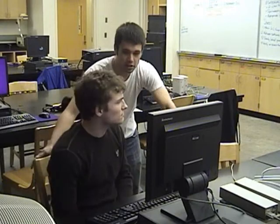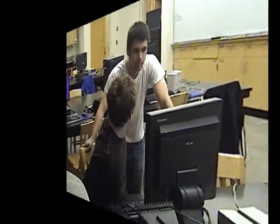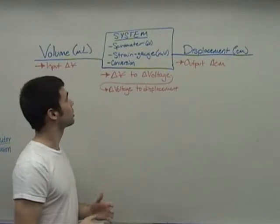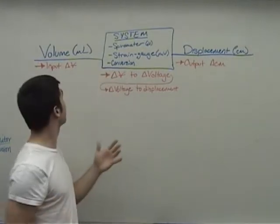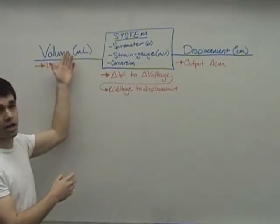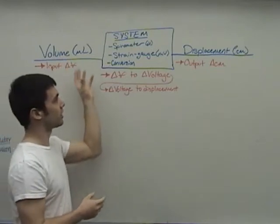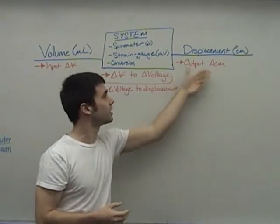Well, I think I can help you out. Let's go over to the board here and jot some stuff down. So the first thing that we're going to want to establish is what our system is. Now, based on what you're telling me, we have an input of change in volume, and you want to get the output of displacement in centimeters.